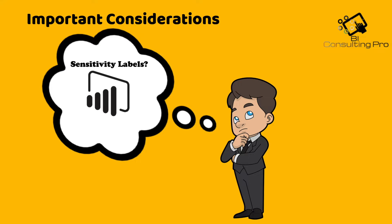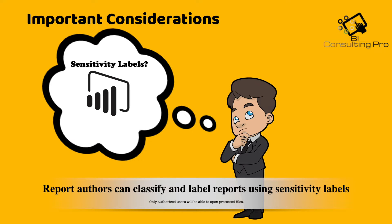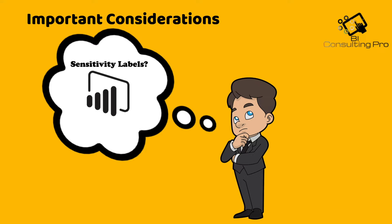Report authors can classify and label reports using sensitivity labels. If the sensitivity label has protection settings, Power BI applies those protection settings when the report data is exported to Excel, PowerPoint, or PDF files, and then only authorized users will be able to open the protected files.